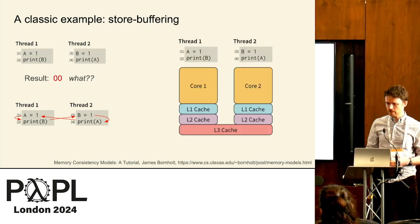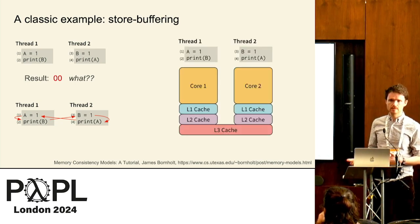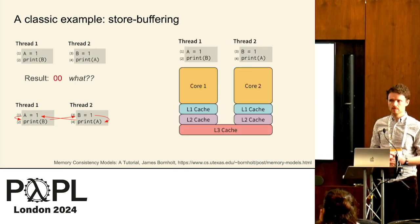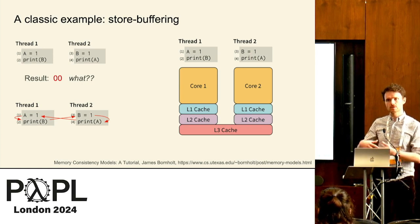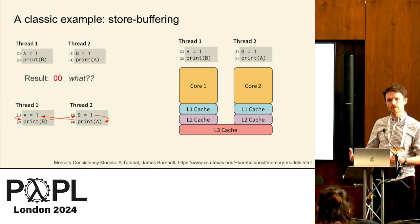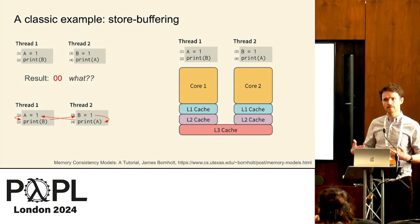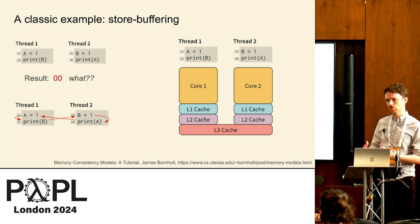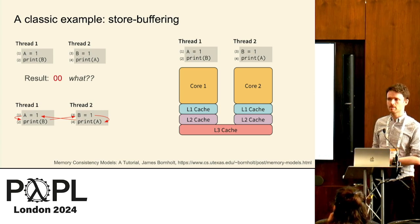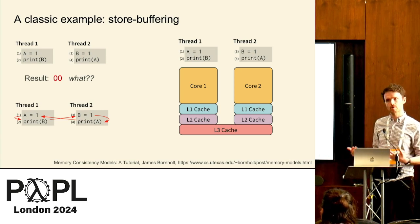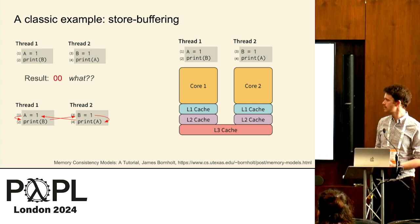What's actually happening is that each thread isn't running on a single shared memory — it's running on a memory that has many caches. These caches can store values being written without needing to write to main memory, so things don't have to propagate at the same time.